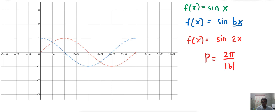So whatever the value of the constant dito, divide lang natin from 2π. So P is equal to 2π over 2, which is equal to π. Ibig sabihin nito, yung isang buong cycle of the graph is already completed from 0 to π.